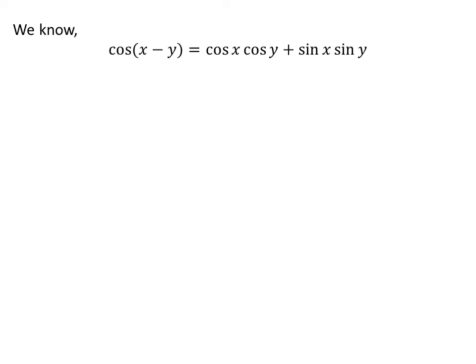We know cosine of x minus y is equal to cosine of x times cosine of y plus sine of x times sine of y.